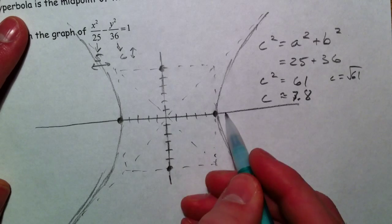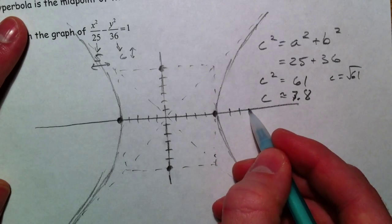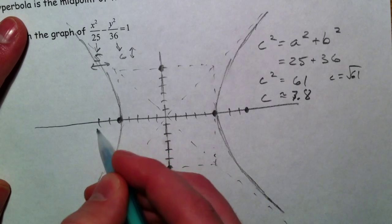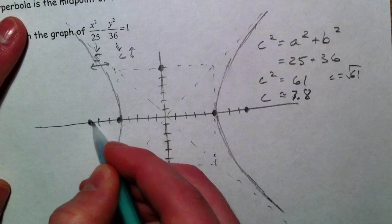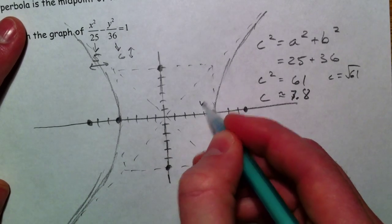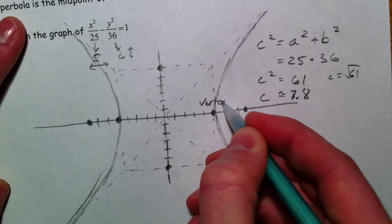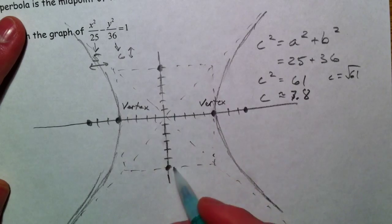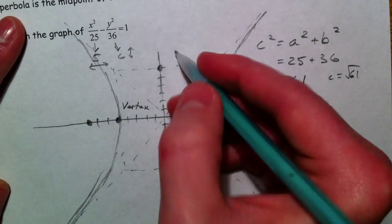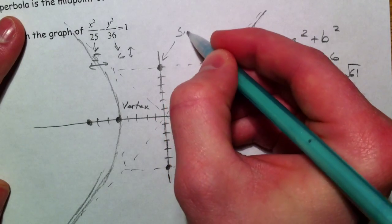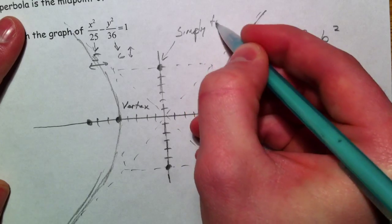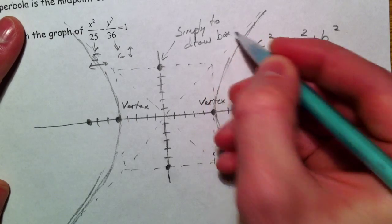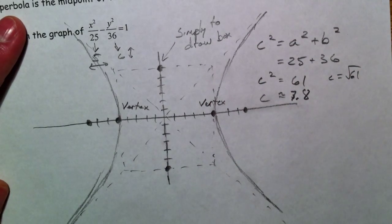And so we're going to go out 5, 6, 7, .8, and that's the focus. And so this is what we call a vertex. And a vertex together, they are vertices. These points aren't really anything, simply to draw the box. We had covertices with ellipses, but now we're just going to have points that help us draw the box.